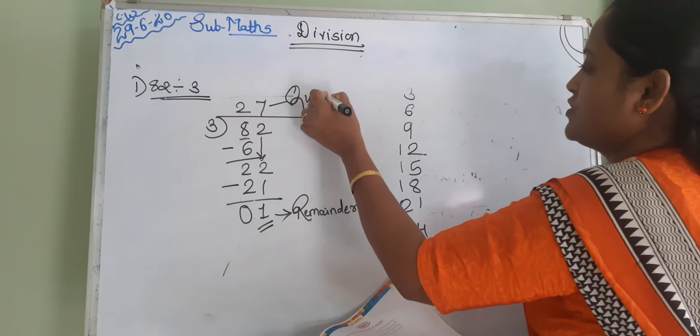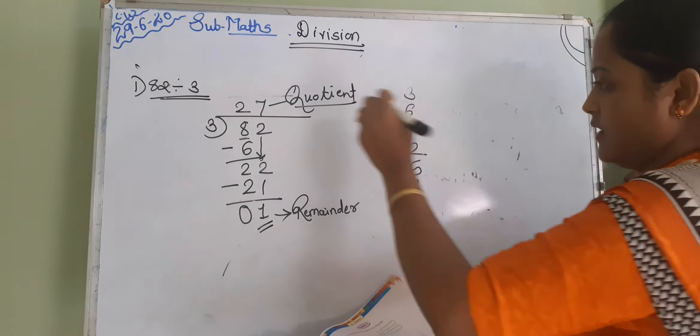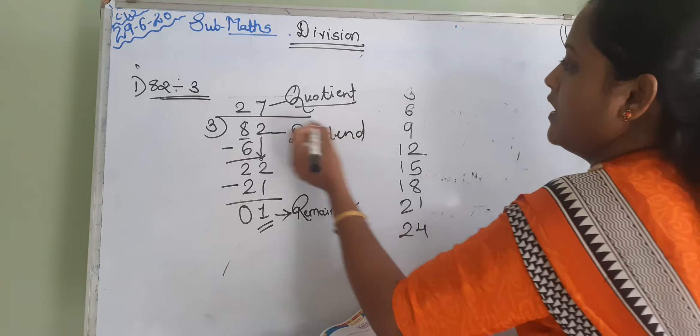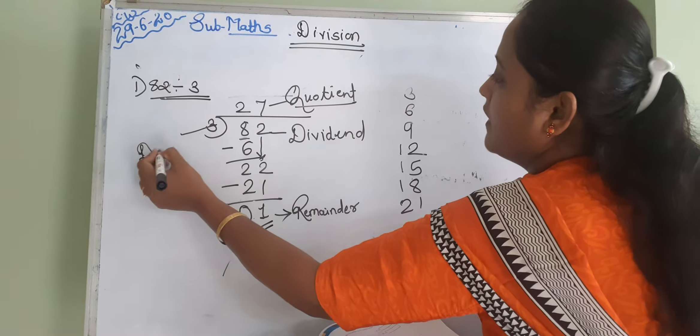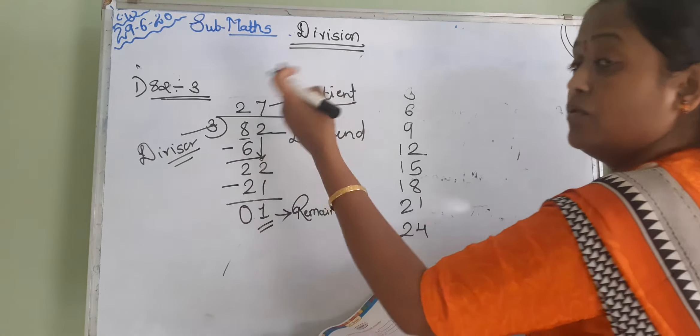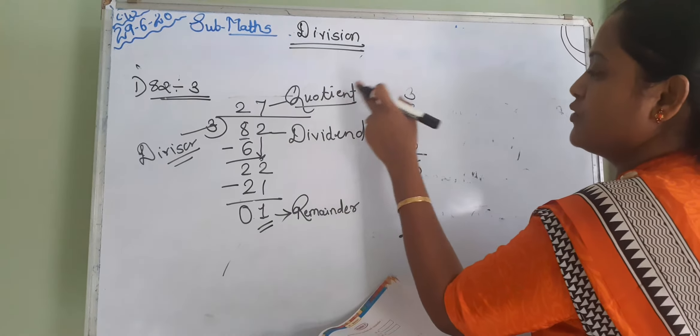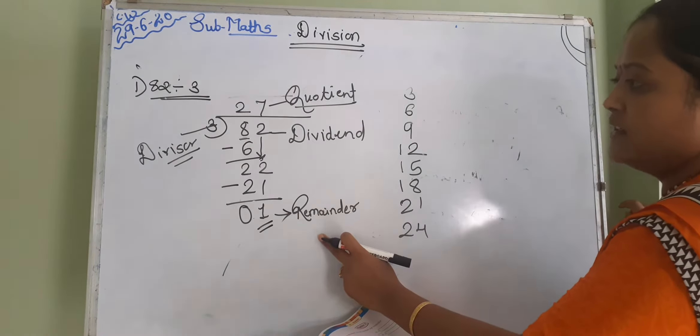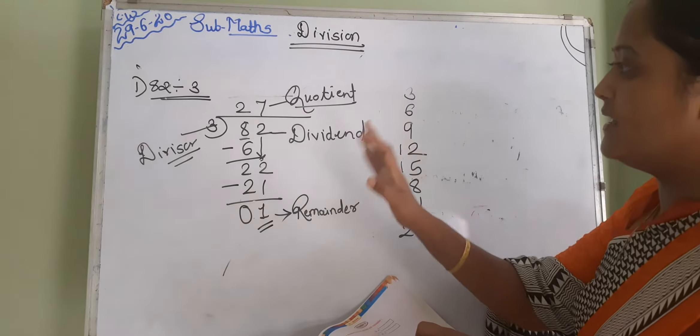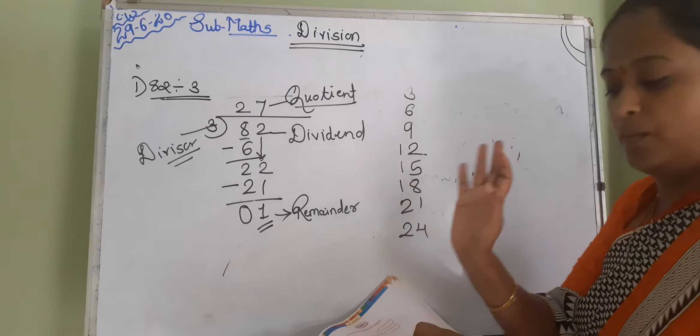It's a quotient. यह होगा आपका quotient. Then it's dividend. यह आएगा आपका divisor. जिससे हम divide करते, वो divisor, जिसको divide करते, it's a dividend. जो answer आएगा after dividing, it's a quotient. और जो remaining रहता है, last number जो, it's a remainder. Students, you clear that? Which is the quotient, which is the divisor, which is the remainder?